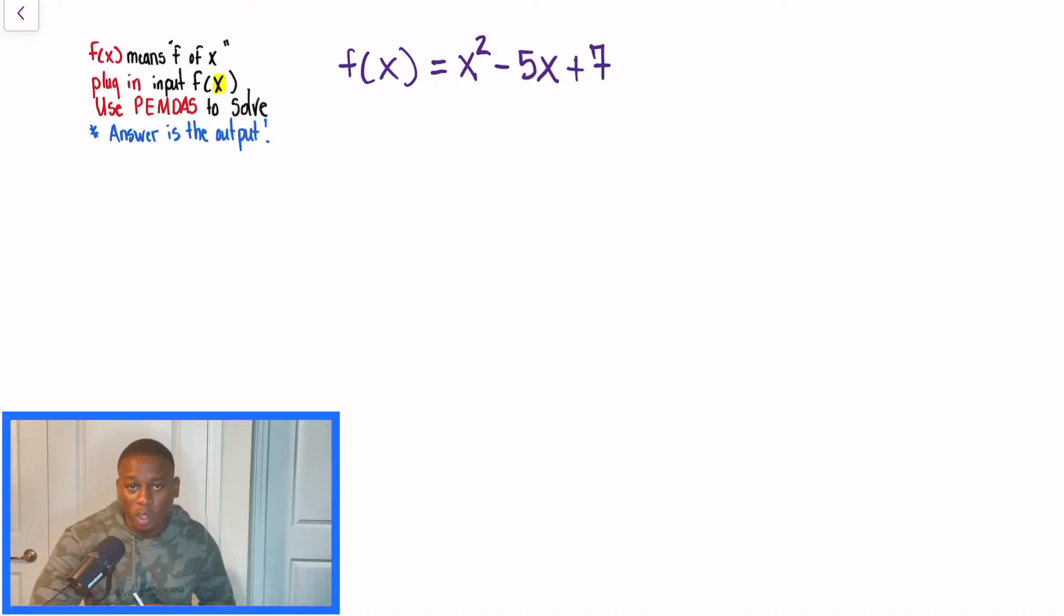So first off, just remember that f of x is the same thing as y. It's just a different notation we use for functions. And when we have a problem like the one in front of us, typically what they do is put a comma. They say find f of negative 2, and let's see, they also say find f of 3.